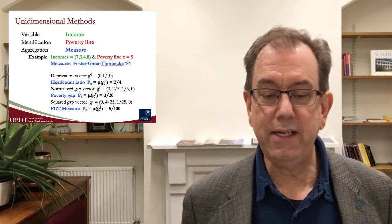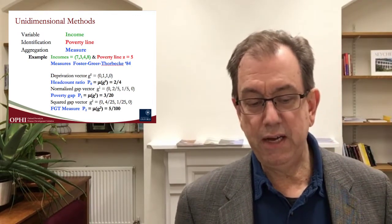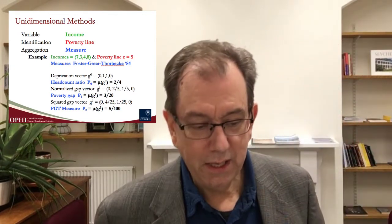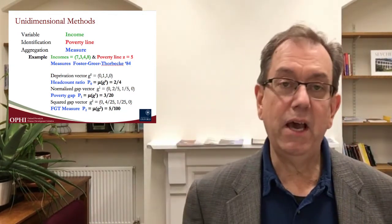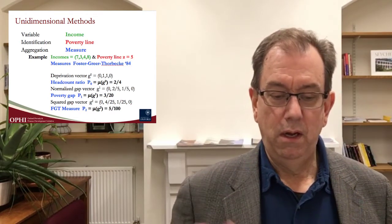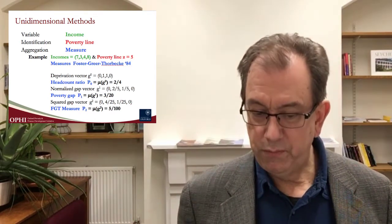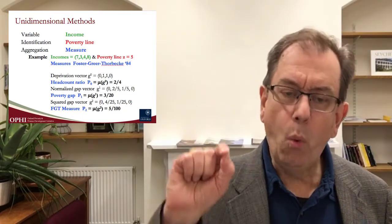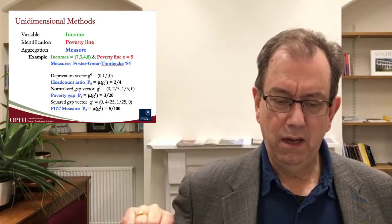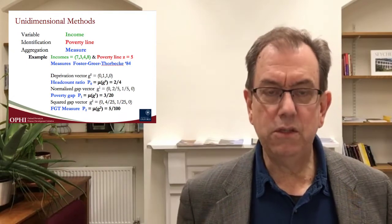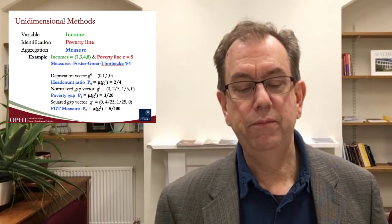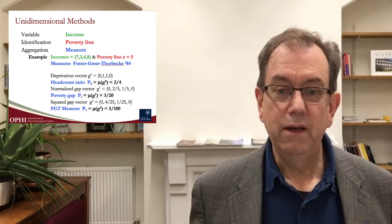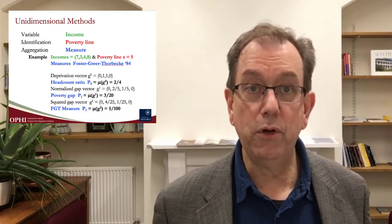Income: 7, 3, 4, 8. Poverty line is 5. The first measure of the FGT class is given by the head count ratio. Construct and look at this carefully: for everyone who happens to be below the poverty line, put a 1 in their place; others put 0. That's the so-called deprivation vector. Take a mean of that deprivation vector and you obtain the head count ratio — 2 out of 4 people are poor.